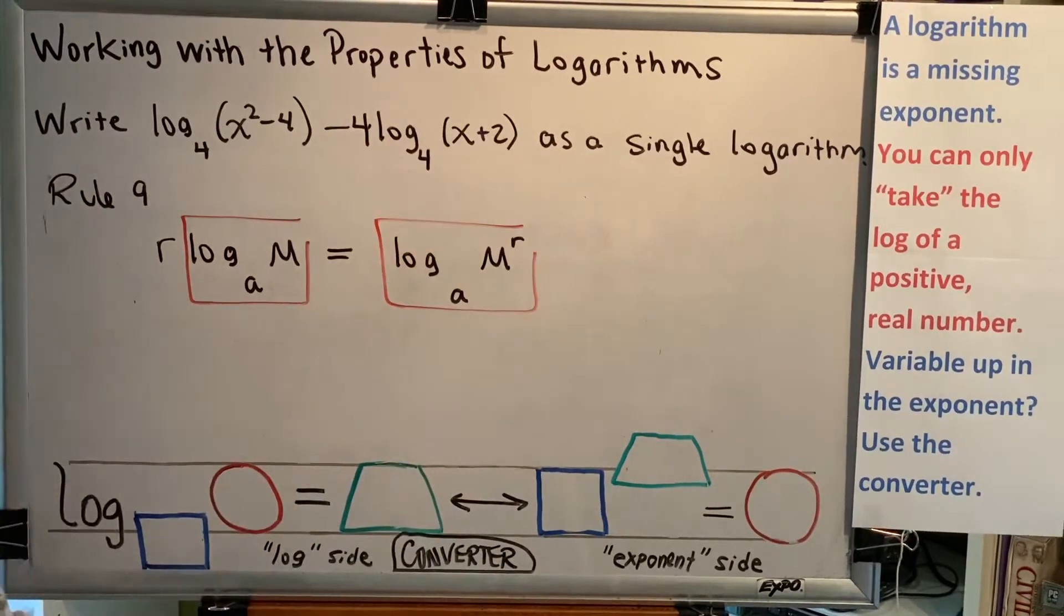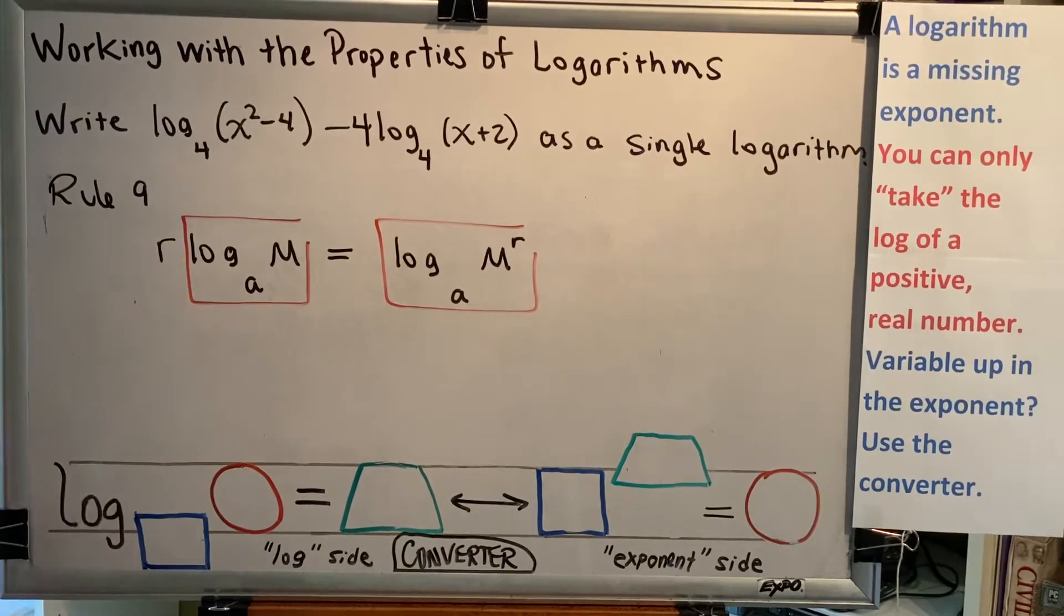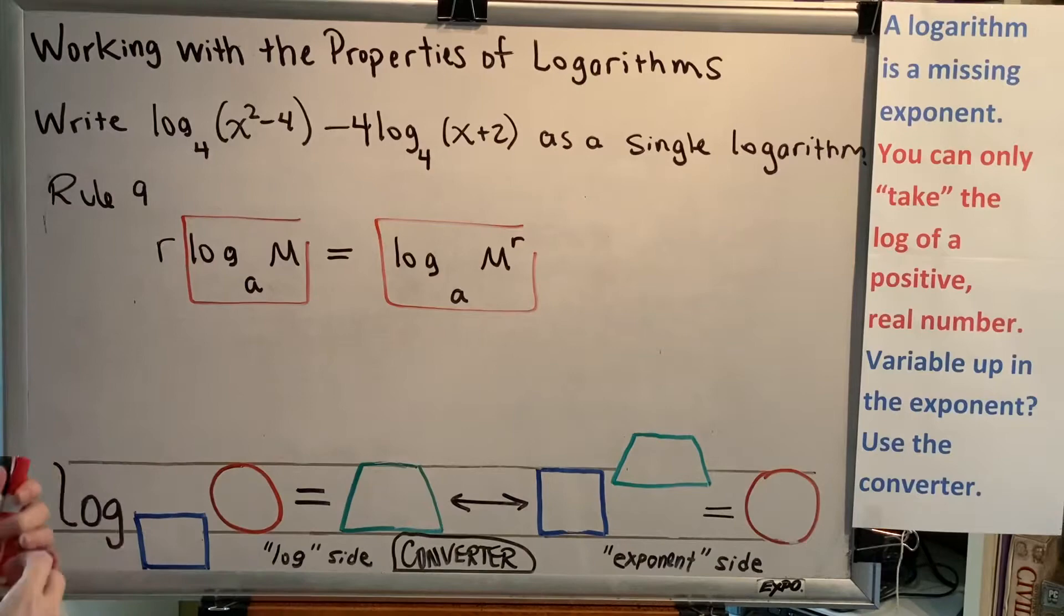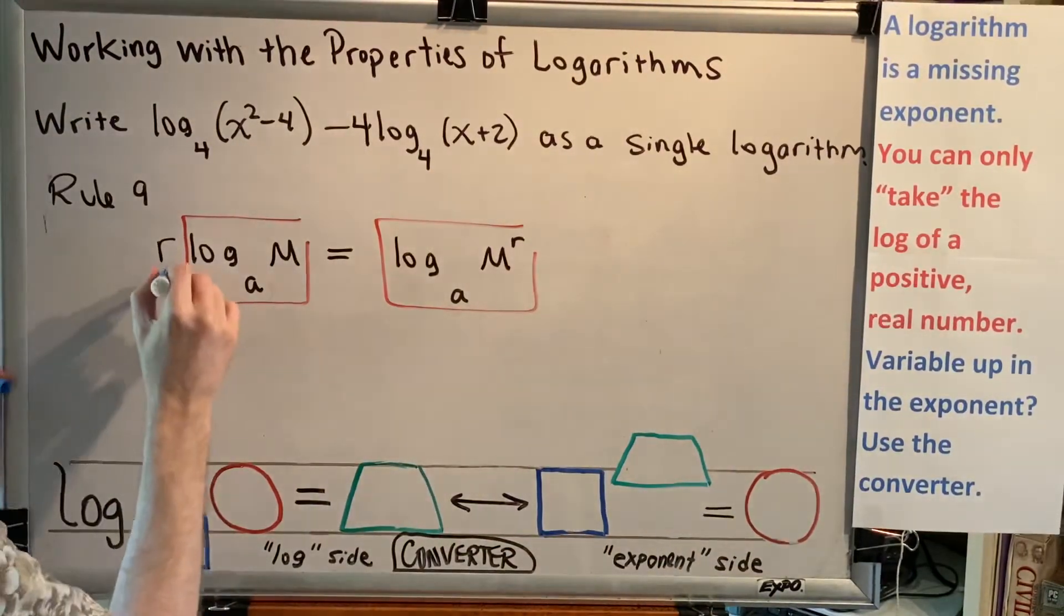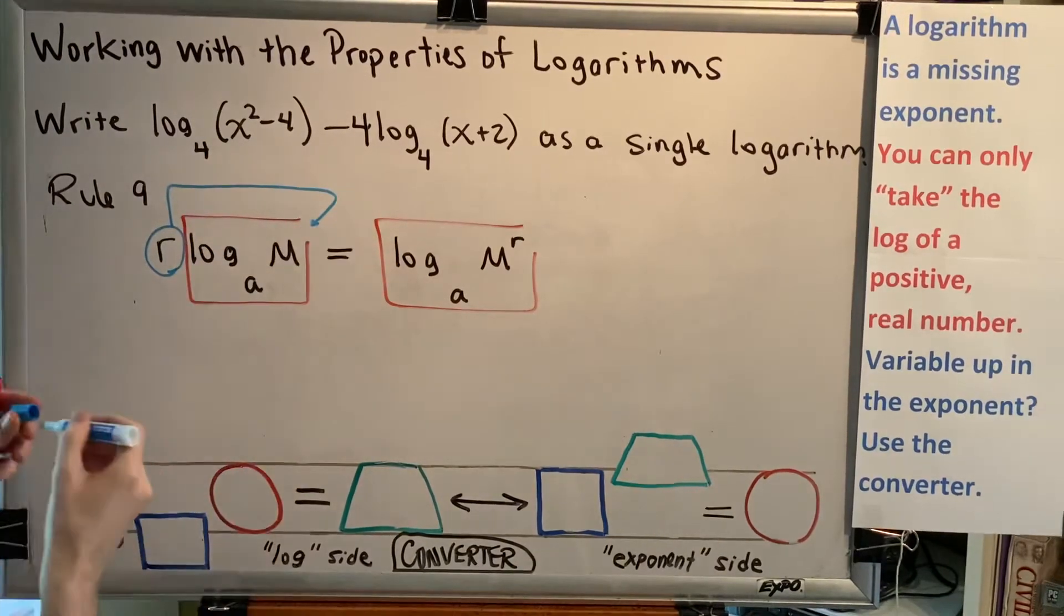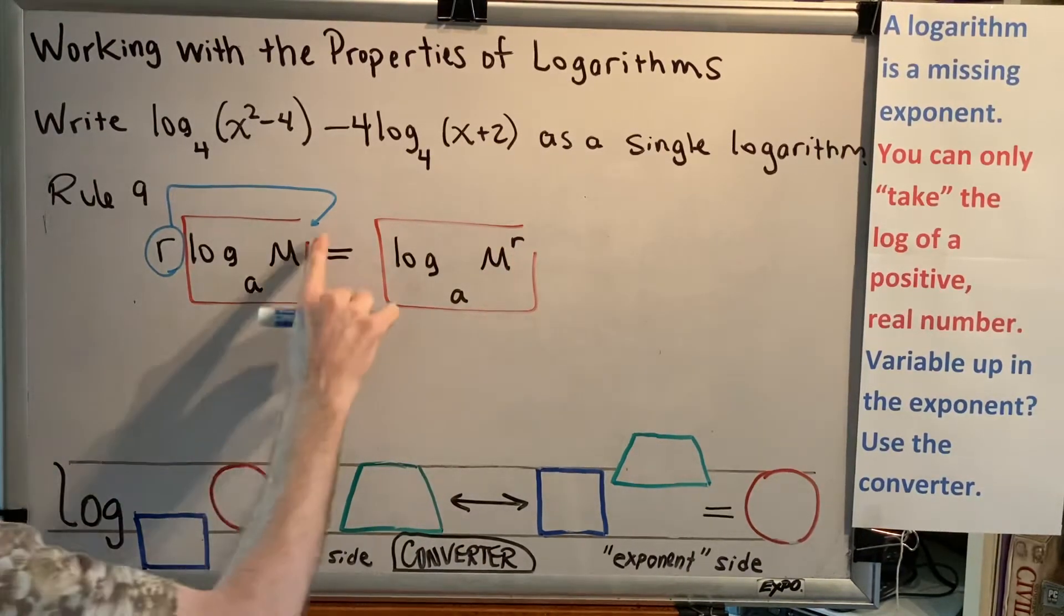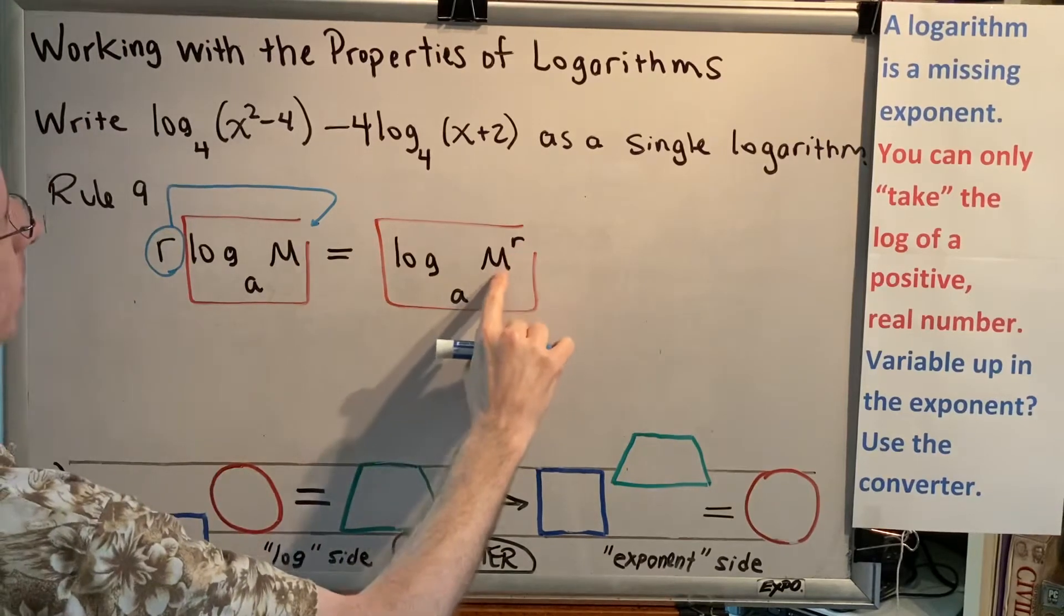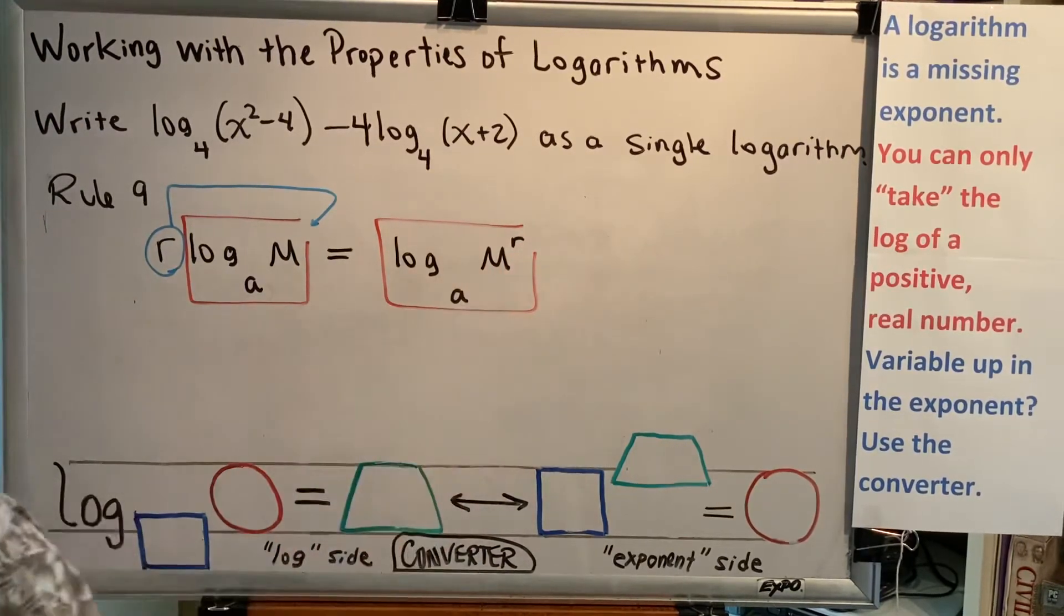I'd like to draw the bricks in this statement so that you can see exactly what's happening. On the left, we have a logarithm that's being multiplied by r, and that r is outside of the log, outside of the brick. Rule 9 allows us to take a factor that is multiplying by a log and move it from outside the brick to inside the brick. This rule is the reason why the brick has an opening in the upper left-hand corner. So when the r comes inside, it becomes the exponent of the argument, and we have log base a of m to the r power.